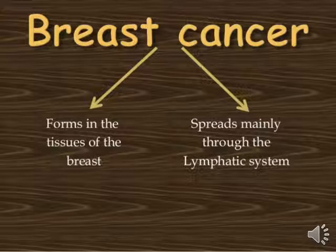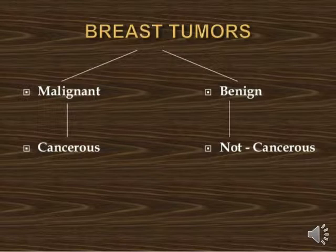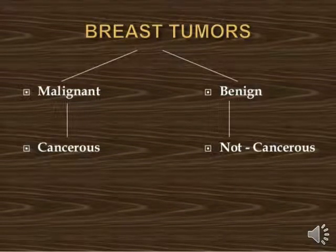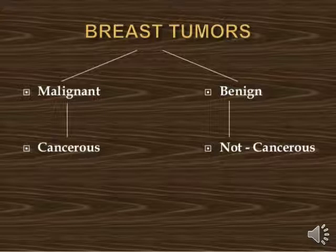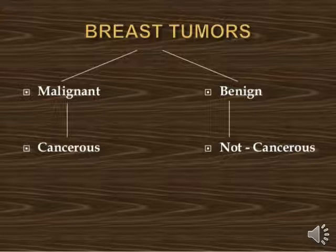Breast tumor, or breast cancer, basically has two types: malignant type and benign type. Malignant type means a cancerous condition of a tumor or cell, and benign type means a non-cancerous situation. In malignant conditions, the process of oncogenesis continuously happens, but in benign conditions that process does not occur, which is why it is non-cancerous. Malignant has a chance to spread to surrounding areas, while benign does not carry that risk.